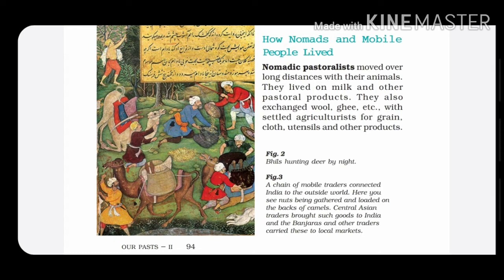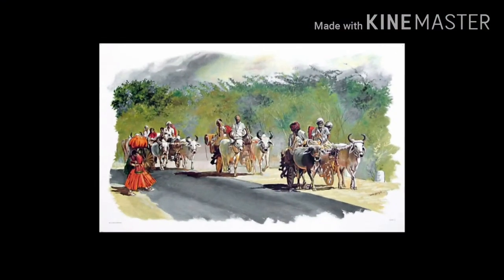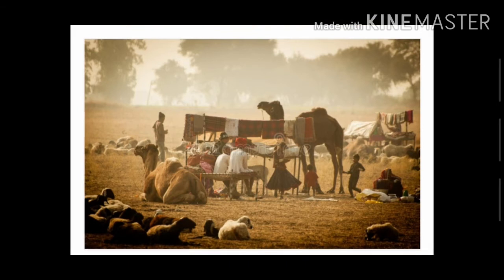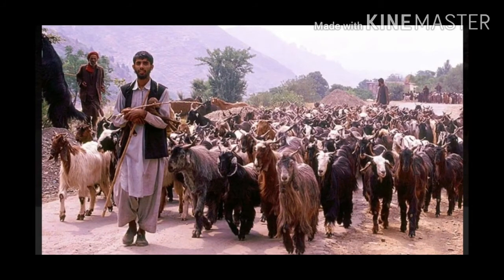Now, next is nomadic pastoralists. Who are nomadic pastoralists? They are also like nomads, but when they move, they move along with their animals. Nomadic pastoralists domesticate animals like sheep or cattle. And they also move from one place to another, but they move along with their animals.